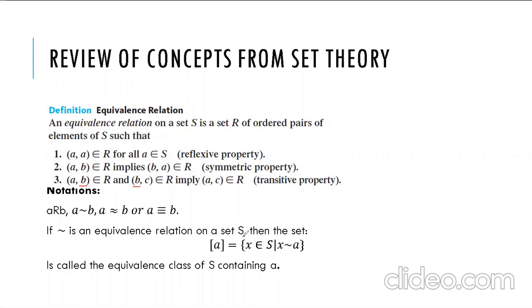There are various ways to represent an equivalence relation. Sometimes we write 'a relates with b' or 'a is equivalent to b.' It can be denoted in different ways — sometimes by the approximation symbol, by an equivalence symbol, or by a congruence symbol. There are different notations used for equivalence relations.